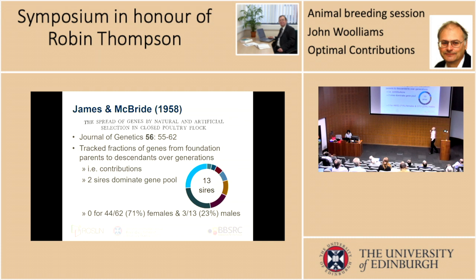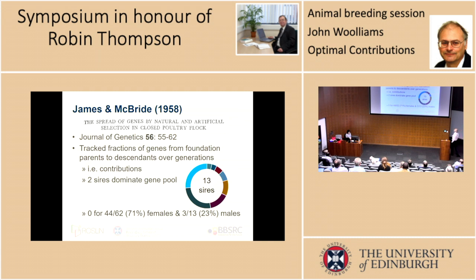In other words, how much impact did one individual have on a gene pool over a long period of time? In this poultry flock — a closed population — they had 62 foundation females and 13 foundation males, and they looked at over generations. As is often typical in small populations, a few generations later 44 females were making no contributions at all. Out of the 13 males, three males didn't make contributions; the other 10 distributed as shown, with two of them dominating and others making very small contributions.